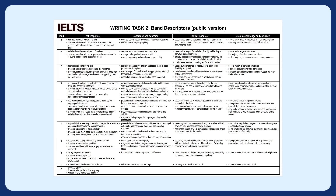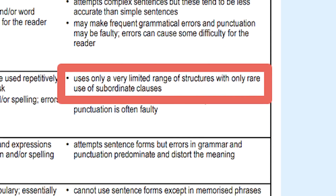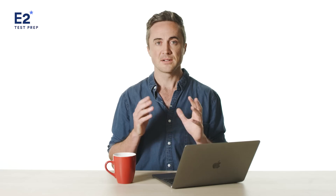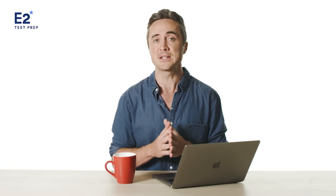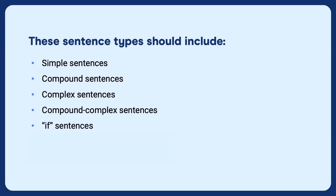These are the writing criteria the examiners use when marking your writing. Every IELTS examiner must follow these guidelines to give you your score. You're marked in four main ways from zero to nine. One of the ways you're marked is grammatical range and accuracy — notice the word 'range' there. If you take a close look at a band score of four, it says 'uses only a very limited range of structures.' To overcome this, you must write a variety of sentence types, including simple, compound, complex, compound-complex, if-sentences, not-sentences, and maybe even a question sentence or two.